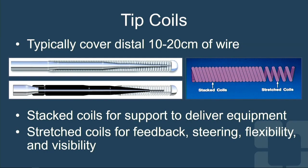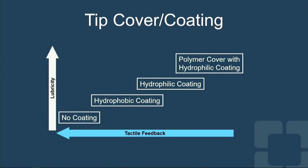The tip of the wire is typically covered in a coil, which typically covers the first 10 to 20 centimeters on the working end. The coils tend to be stacked in the middle part and spaced out a little more towards the tip — that provides feedback, steering response, flexibility, and visibility to steer the wire. The tip can have a hydrophilic, hydrophobic, or fully polymer-jacketed covering. The more coating you put on it, you lose tactile feedback but improve lubricity. It's a yin and yang — you have to decide which things to prioritize.